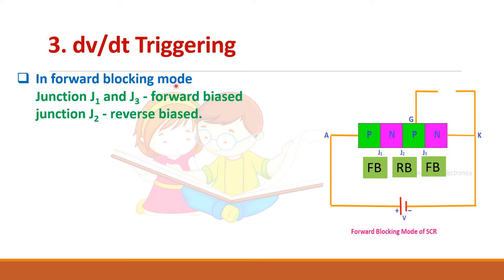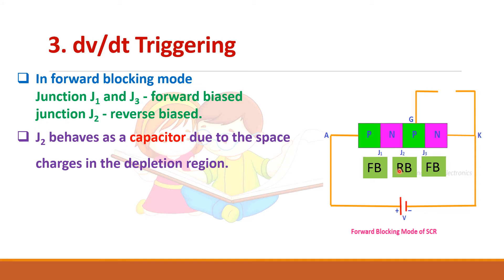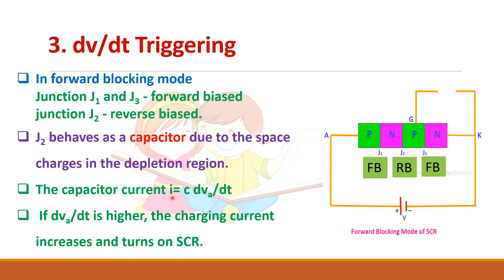In the forward blocking mode, usually the two outer junctions are forward biased while the middle junction J2 is reverse biased because the gate circuit is open. This junction J2 acts like a capacitor. The current through the capacitor can be given by C times dv/dt. So if dv/dt increases, current increases, and once current starts to flow, the SCR goes into conduction. This method is not preferred as it may damage the device.